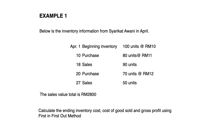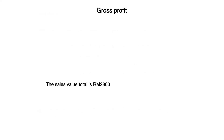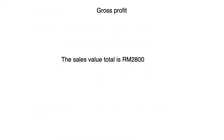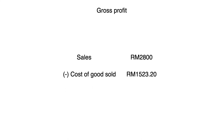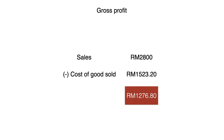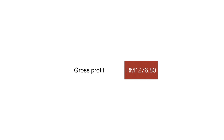Now we calculate gross profit. We start with the amount of sales stated in the question, which is RM2,800, then subtract the cost of goods sold we just calculated. The gross profit is RM1,276.80.